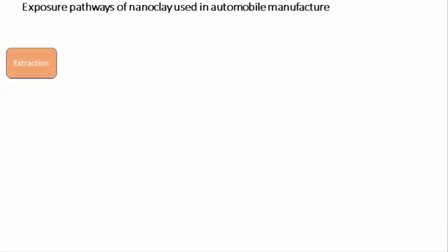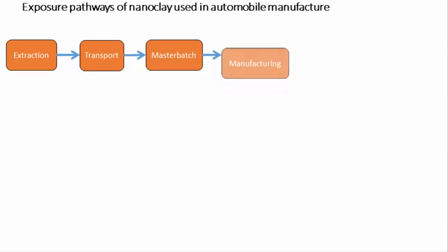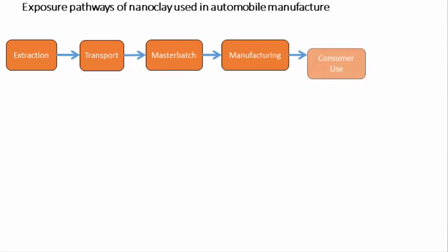Next, to describe the life cycle of nanoclay nanocomposite plastics used in automobiles, create a life cycle map of nanoclay. You are welcome to create a simpler life cycle map — here I am creating a linear map. Consider releases of nanoclay that may lead to worker and consumer exposures, and also consider releases to the natural environment.